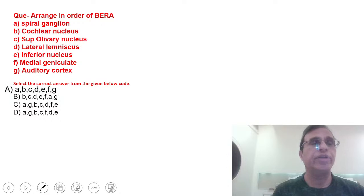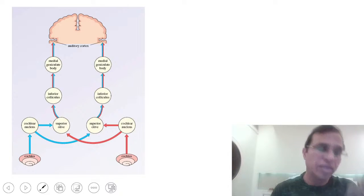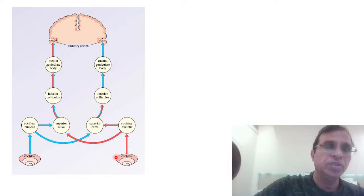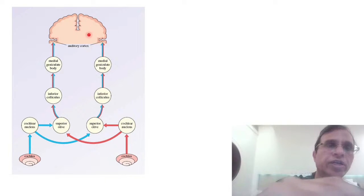This diagram shows how the sound travels through the cochlea. This is the nerve, spiral ganglion lies in this nerve, then it goes to the cochlear nucleus in the pons. From cochlear nucleus it goes to the olivary nucleus, then inferior colliculi, medial geniculate ganglion, and then the auditory cortex.